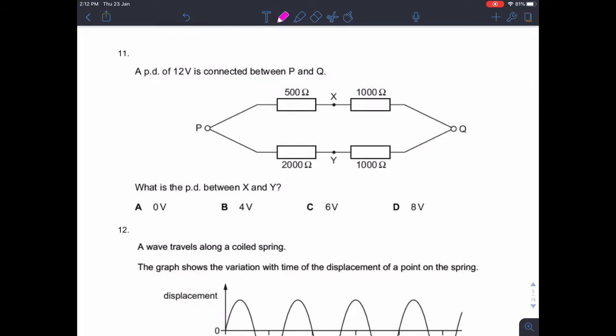Question 11. A PD of 12 volts is connected between P and Q. What is the PD between X and Y? Okay, so let's call this one 12 volts and this one 0 volts, because the potential difference between those two is 12 volts.